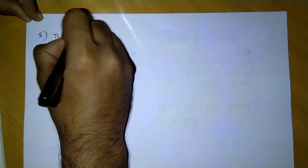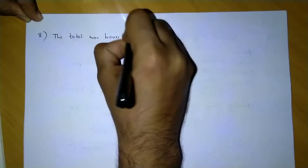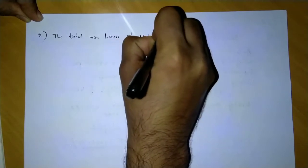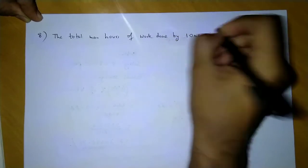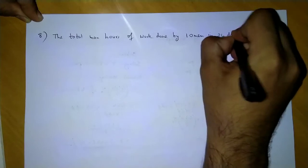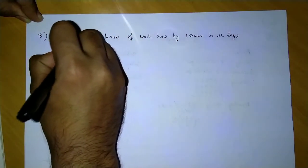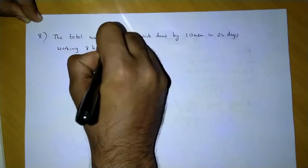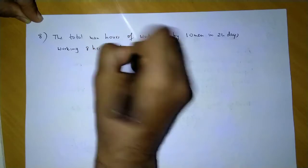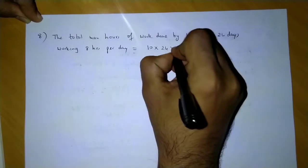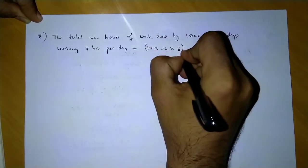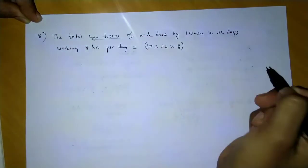We say the total man hours of work done by 10 men in 24 days working 8 hours per day would be: 10 people are working, in 24 days, working 8 hours. So this is the total man hours of work which they will be doing.